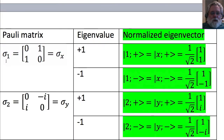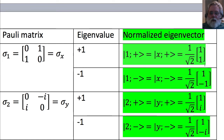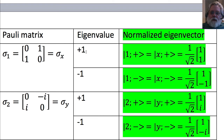For Pauli matrix sigma sub 1, which for spin one-half is sigma x, the eigenvalues are plus one and minus one. The normalized eigenvector for the plus one eigenvalue is one over square root of two times the column vector (1, 1) in our choice of basis, and we give it the ket name x-plus. You could verify this by multiplying the matrix to the left of this vector and confirming you get the vector back unchanged, i.e., times plus one.